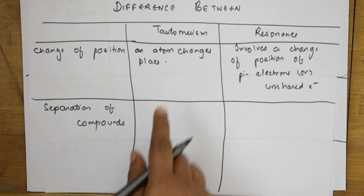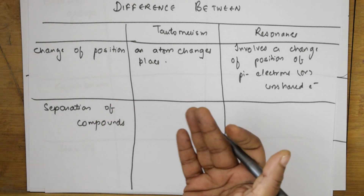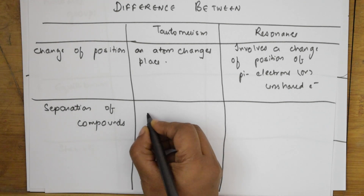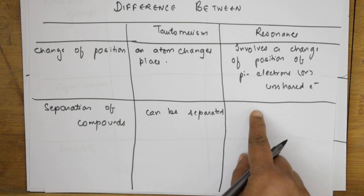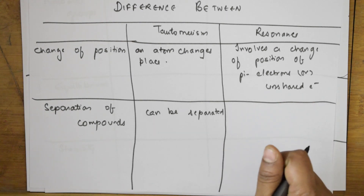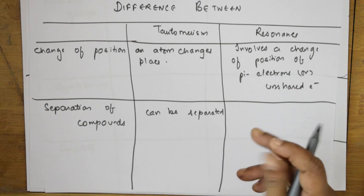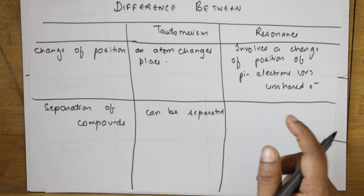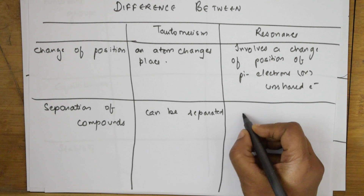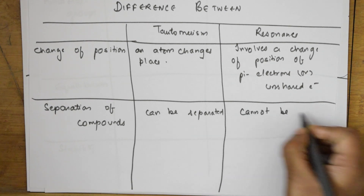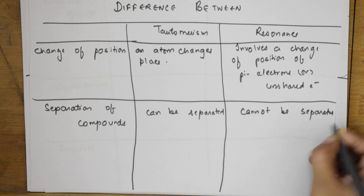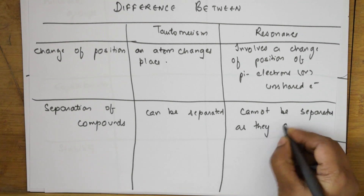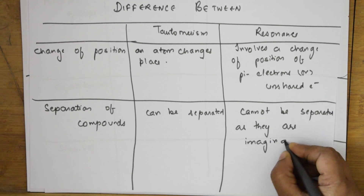The second criteria is separation. Tautomers are different compounds, so they can be separated by suitable methods. When it comes to resonance, the resonating structures cannot be separated because they are imaginary structures — we assume the electrons shift from one position to another, forming the resonance hybrid.